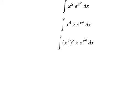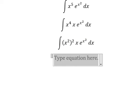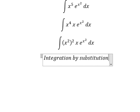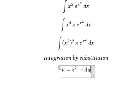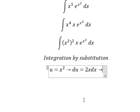Now we need to use integration by substitution. I will put u equals x squared. Then we take the first derivative of both sides, and we have du equal to 2x dx. Because we don't have the number 2, so we divide both sides by 2.